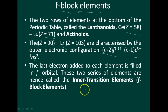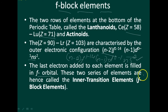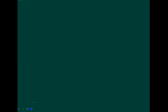The last electron added to each element is filled in the f orbital. These two series of elements are hence called inner transition elements. They include lanthanoids and actinoids as seen in the periodic table.